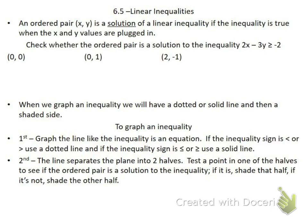The first thing is the ordered pair solution of a linear inequality — it is going to be any ordered pair that is true when my x and y values are plugged in. So with the first problem, I want to check to see if each of the ordered pairs are a solution to this inequality. All I have to do is plug in my three different ordered pairs and see if that's going to be a solution or not.